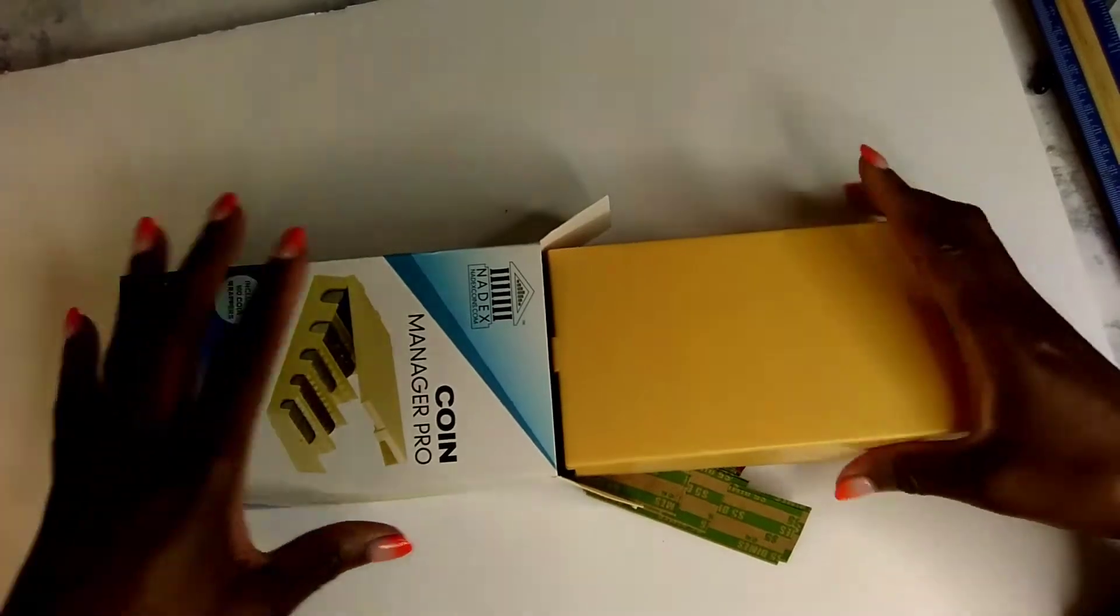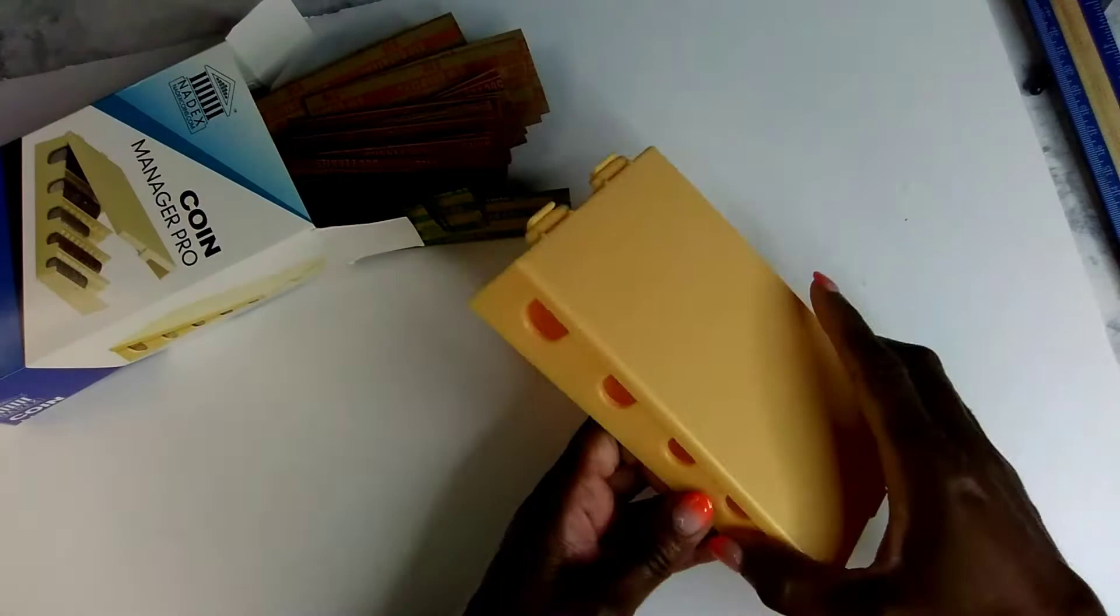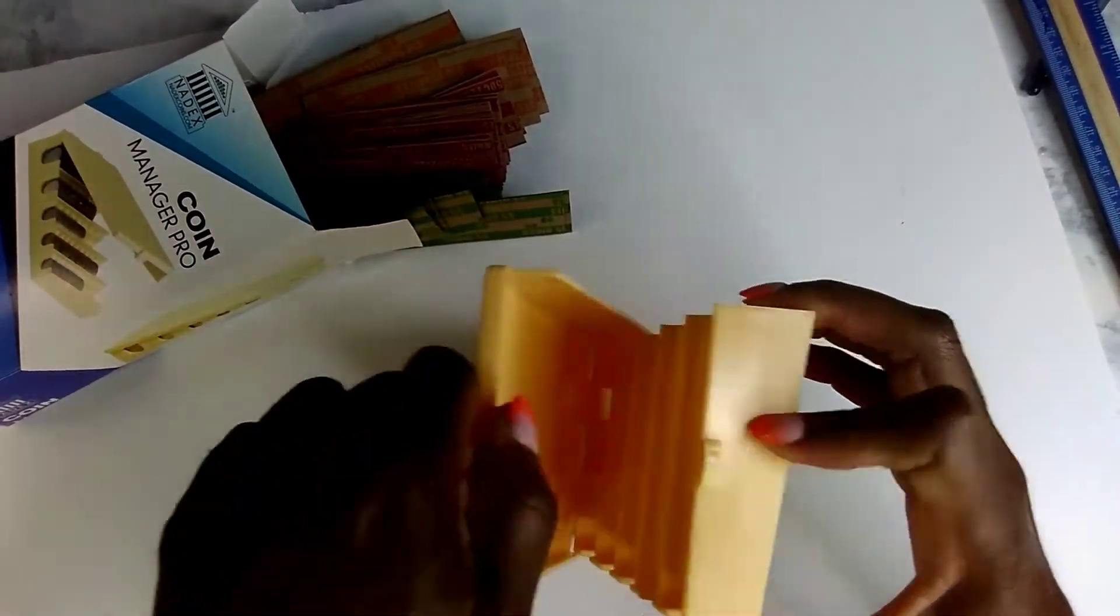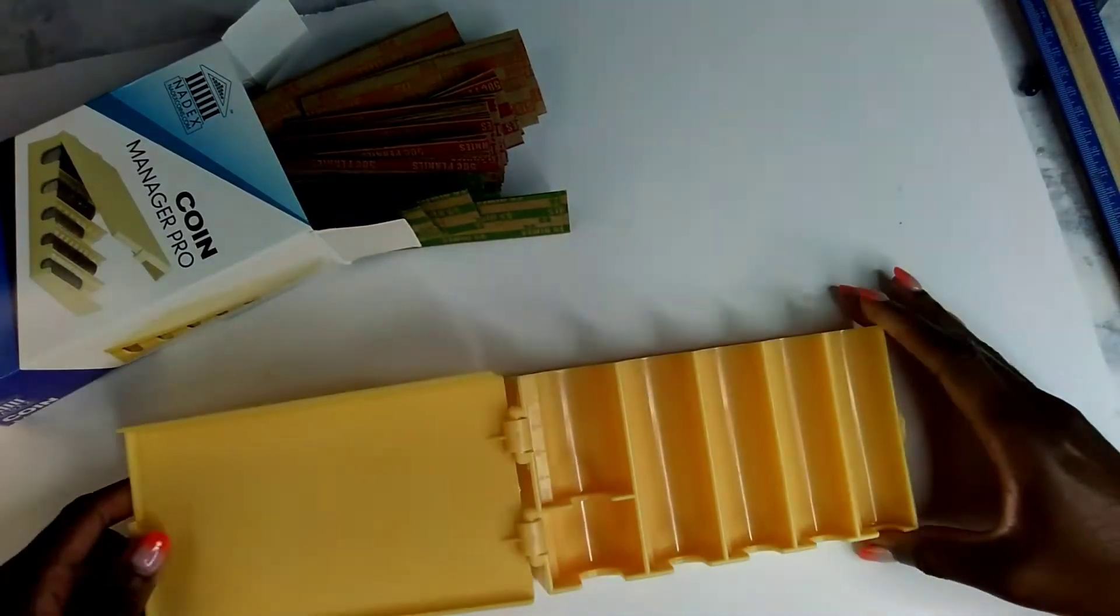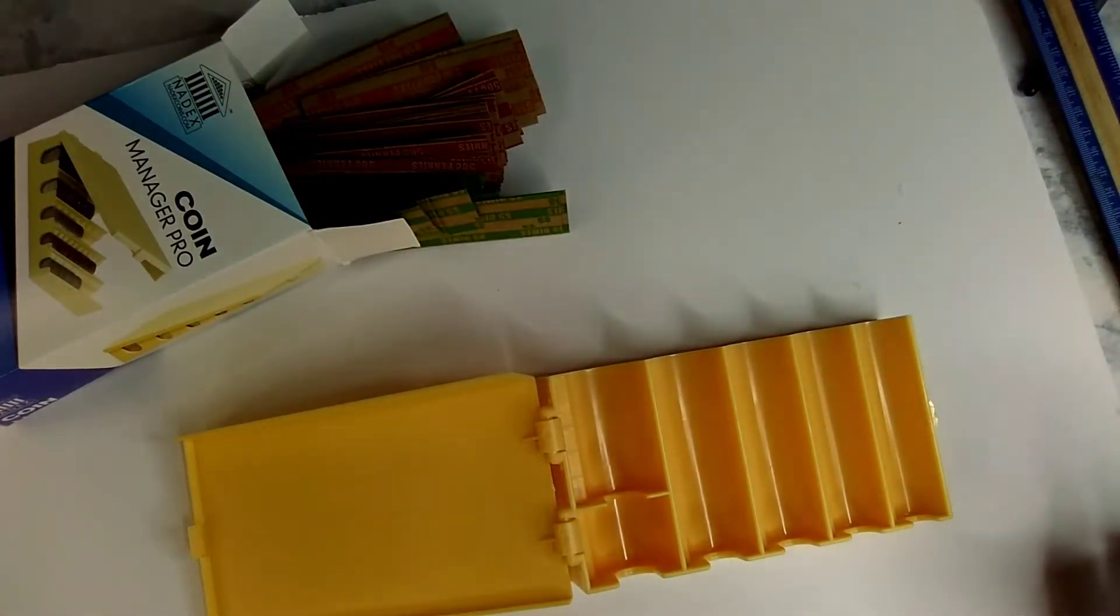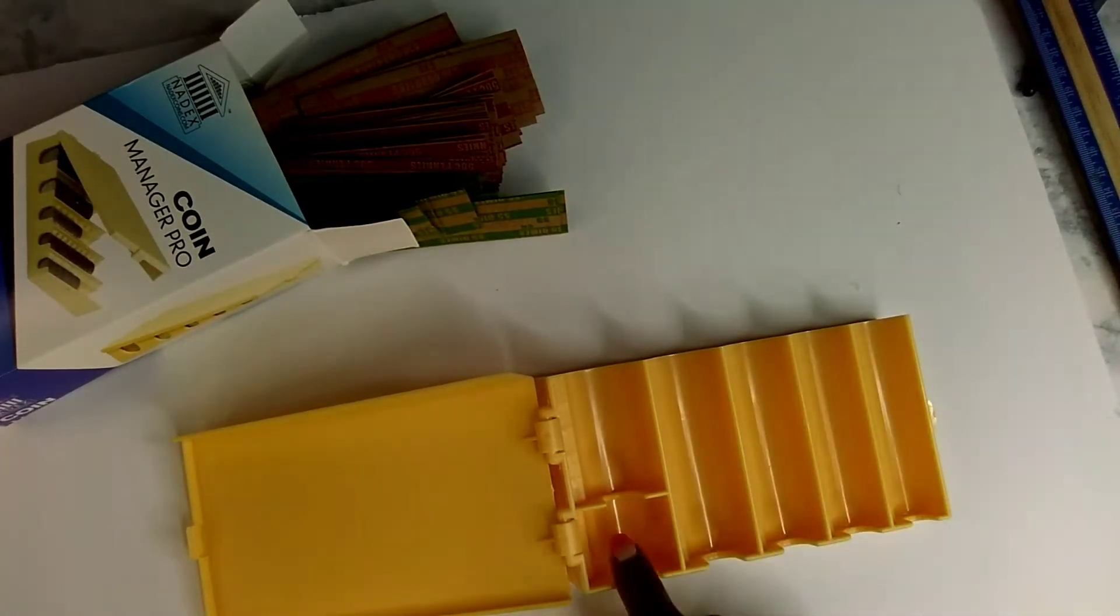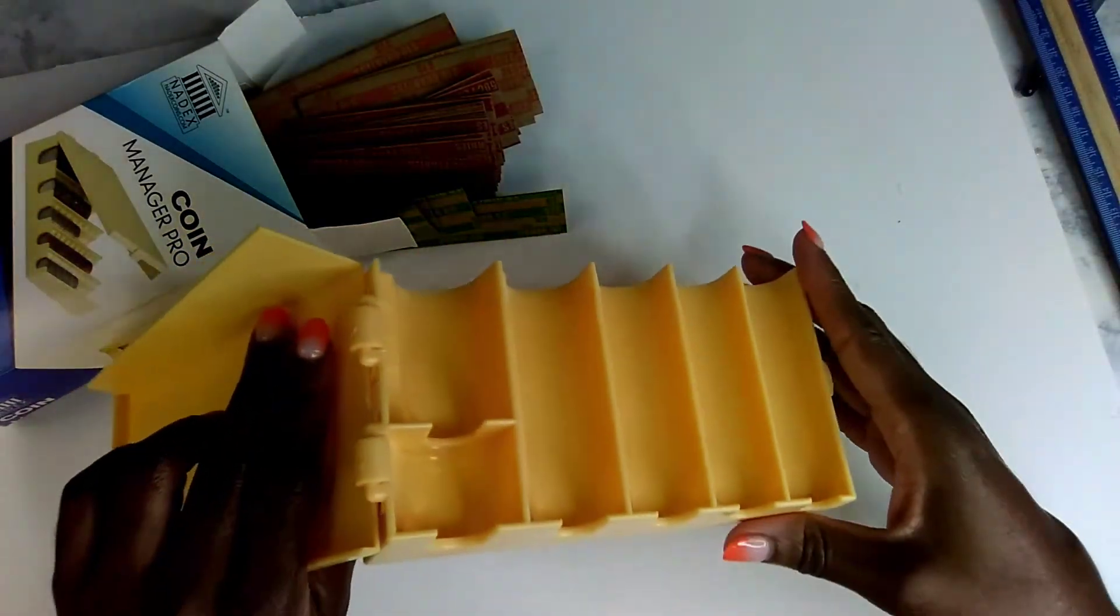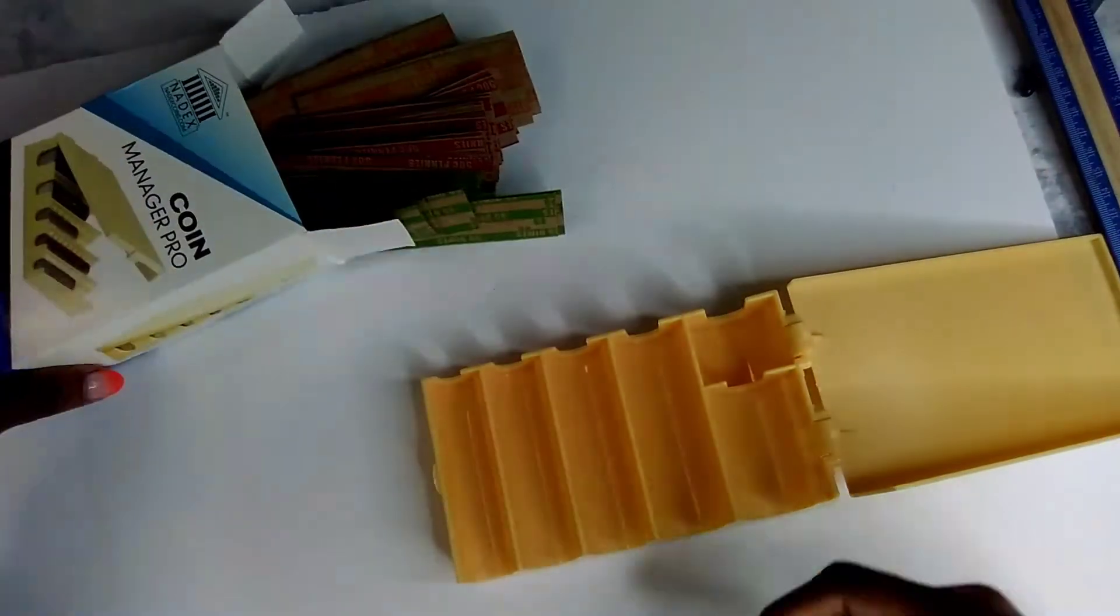It's just a little plastic box and it has all the dimensions of the coins. It's got a place for dimes, pennies, nickels, and quarters, and even has a place right here for the half dollar and dollar coin. I think that's great.